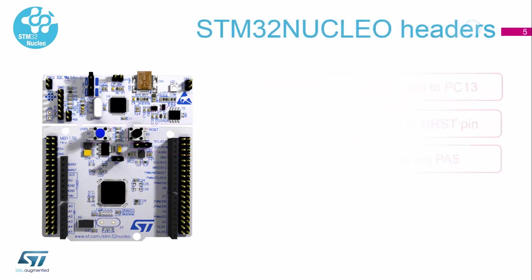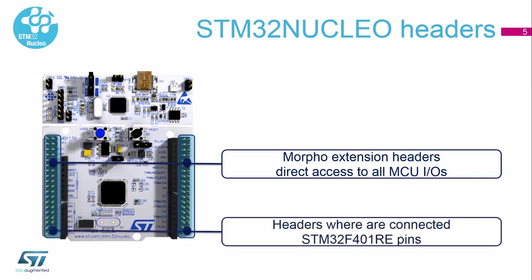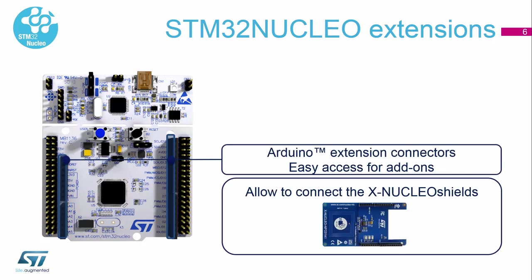On the left and right side there are also headers, where all the pins of the microcontroller are directly connected. You can use them to connect your own application, your own external devices, or you can connect extension shields. There is also a second line of headers where you can connect Arduino extension add-ons or XNucleo extension shields.